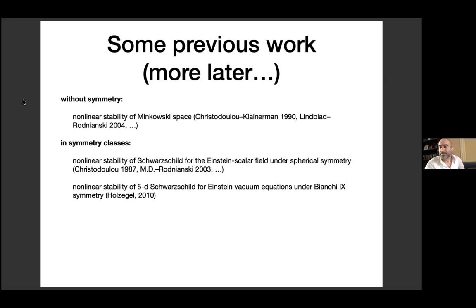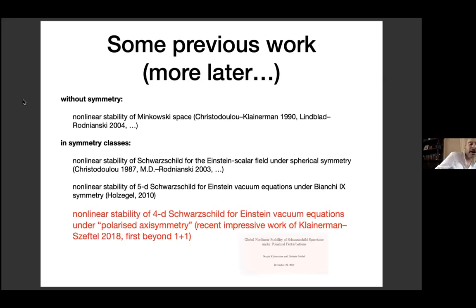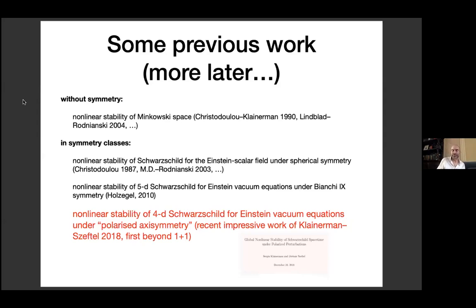By far the most impressive previous work is the recent nonlinear stability of four-dimensional Schwarzschild for the Einstein vacuum equations under polarized axisymmetry — work of Klainerman and Szeftel. This is really the first result beyond one-plus-one, has many features of the full problem, and will use in particular some of the linear analysis that we developed.